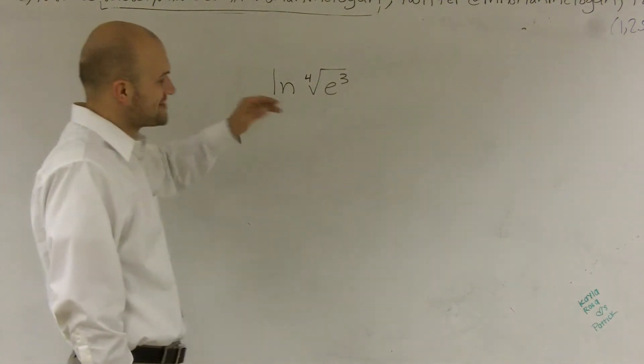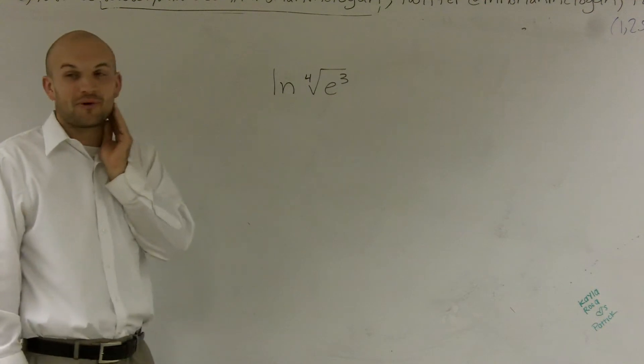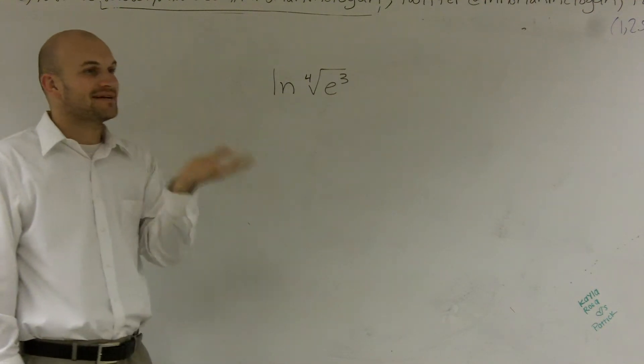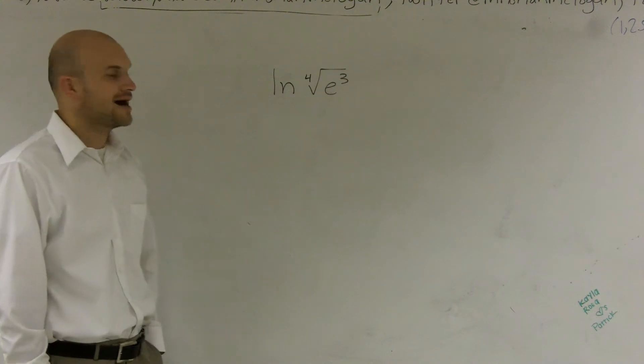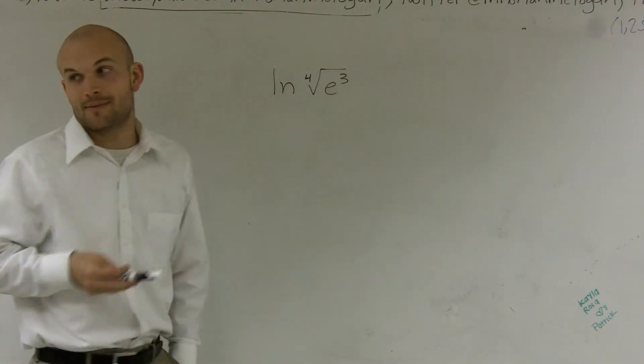What we have here is a natural logarithm, and the problem is we have the fourth root of e cubed. To me, this just looks ridiculous. How am I going to ever solve this without a calculator? I would call bullcrap on me, right?